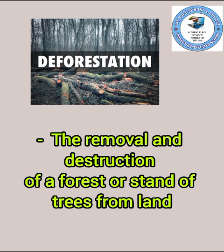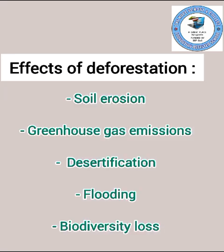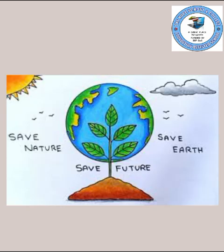Last is deforestation, which is a main reason for climate change. It is the removal or destruction of forests or trees from land. Causes of deforestation include agriculture expansion, wood extraction, infrastructure expansion, road building, and urbanization. Effects of deforestation include soil erosion, greenhouse gas emissions, desertification, flooding, and biodiversity loss. This picture shows the impact of deforestation on our Earth.